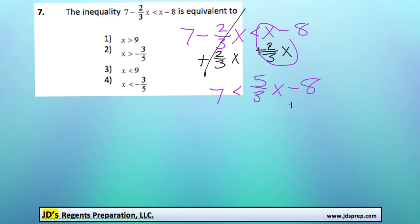Next up we will add 8 to both sides to cancel that out, and we'll get 15 is less than 5 over 3x.